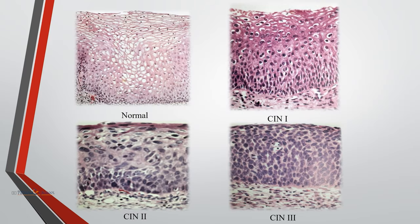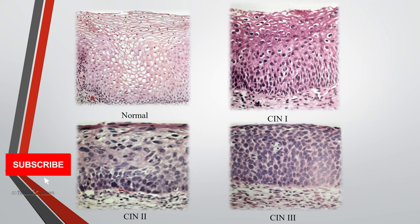Microscopically, in normal squamous epithelium there is no dysplasia. In CIN1 there is mild dysplasia with koilocytic atypia. In CIN2 there is progressive atypia with expansion of immature basal cells above the lower third of epithelial thickness. In CIN3 there is diffuse atypia, loss of maturation, and expansion of immature basal cells to the epithelial surface.